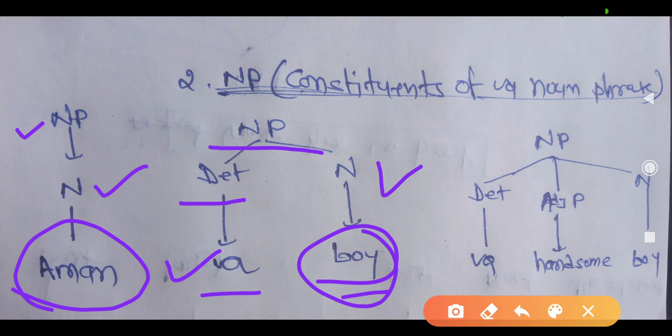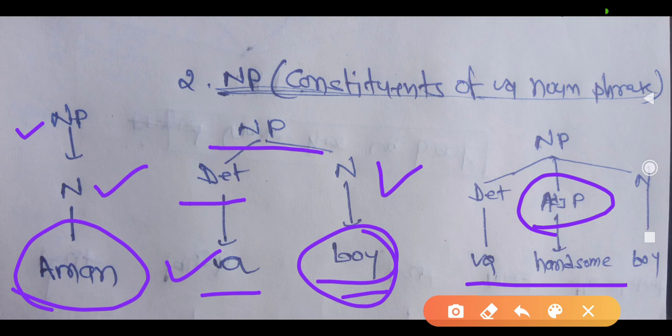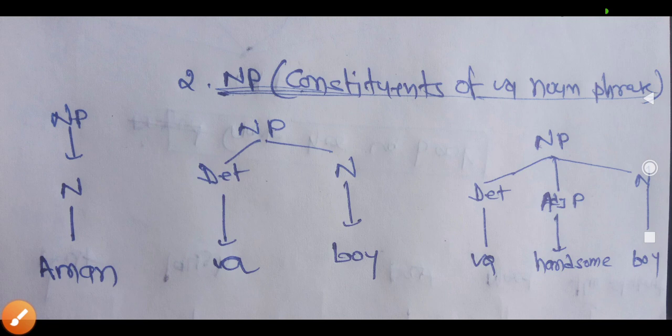Another example of a noun phrase: 'a handsome boy.' In this you see 'a' is a determiner, 'handsome' is an adjective phrase, and 'boy' is an example of noun. So you see that to identify a noun phrase there has to be a noun — the head of the noun phrase is noun — and if there is any determiner or any adjective phrase, you have to segregate them.